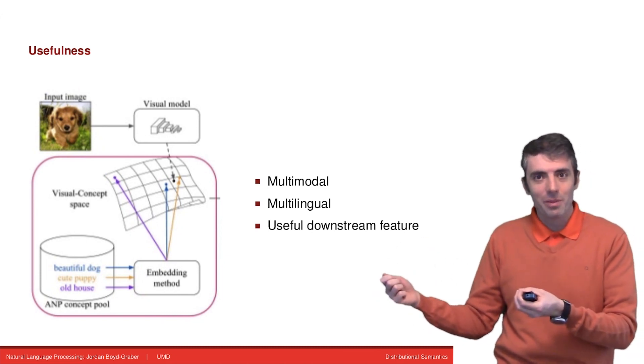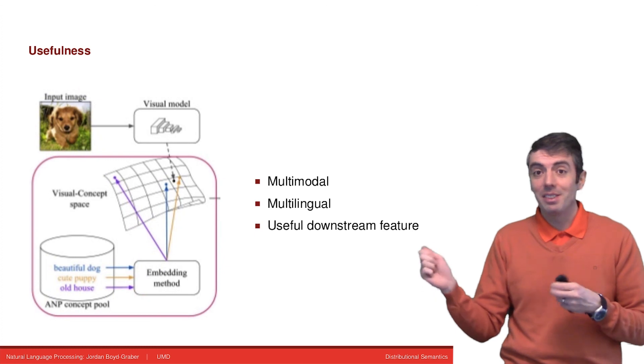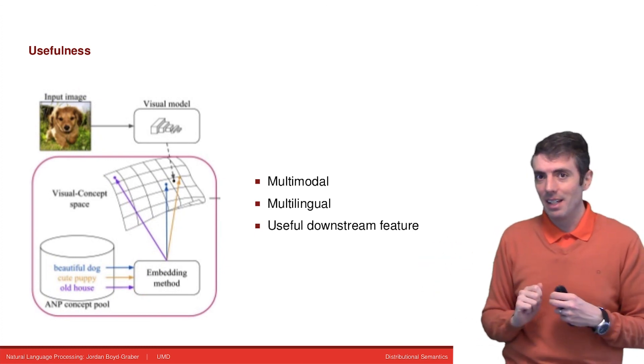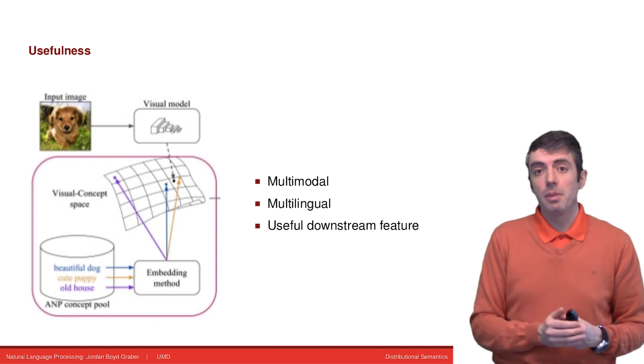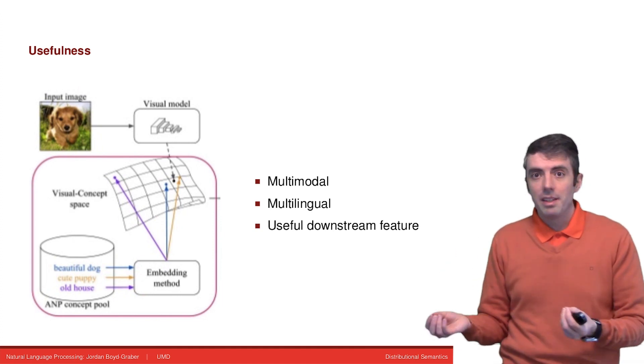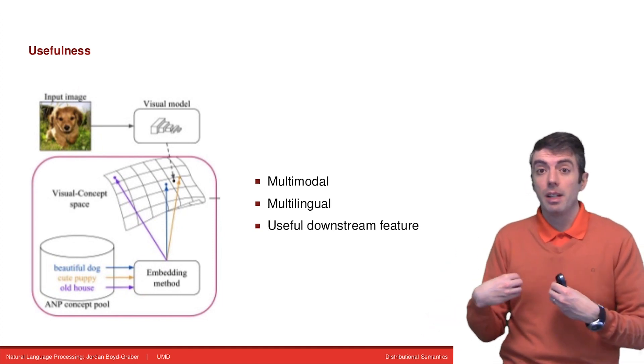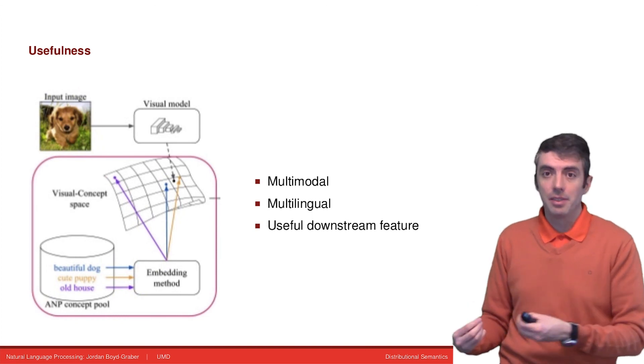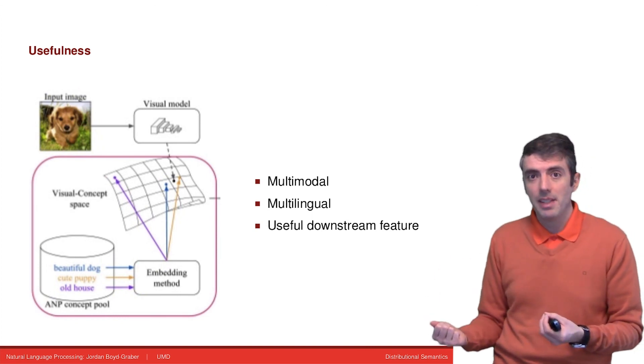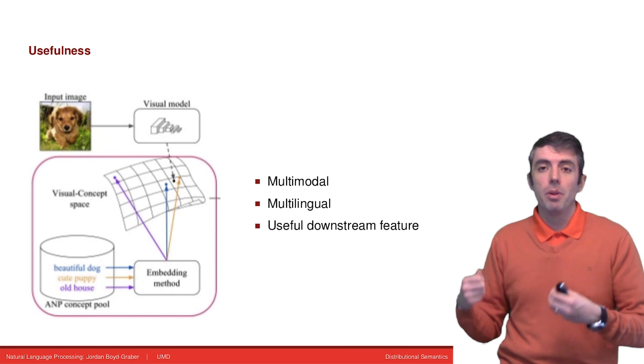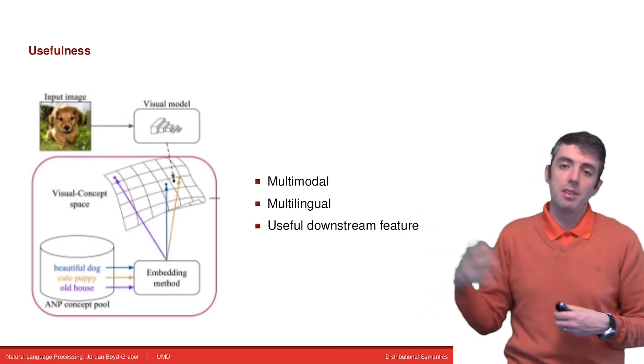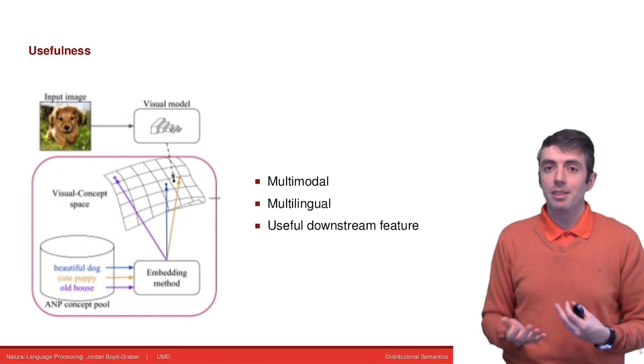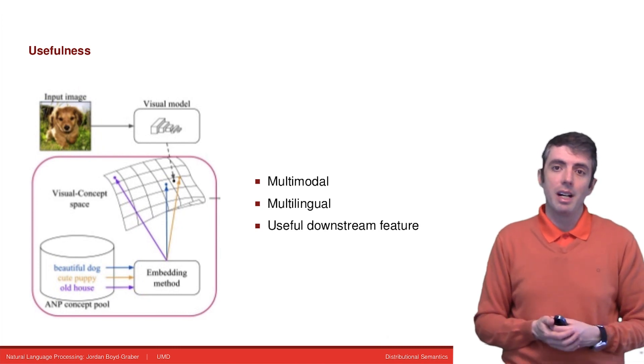You can also use these representations to connect concepts across languages. You can have the same vector representations make sense for German words as for English words. You can do things like take the dot product between Hund, the German word for dog, and Dog, the English word for dog, or Go, the Chinese word for dog. You can compare how similar they are across all of these languages. There are many downstream tasks you can use these representations for. One thing I'm particularly interested in is for navigating large document collections or answering questions. We'll see examples later where we can represent both words and documents, questions and answers with a single vector representation and use that to answer questions or to navigate a large document collection.